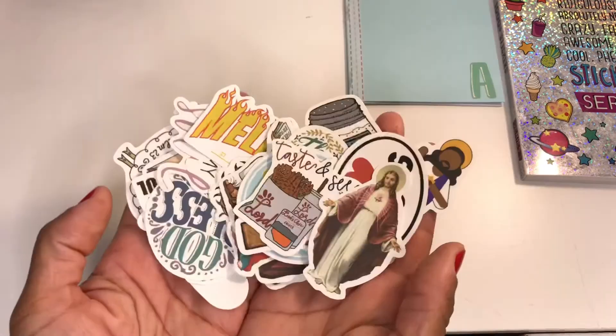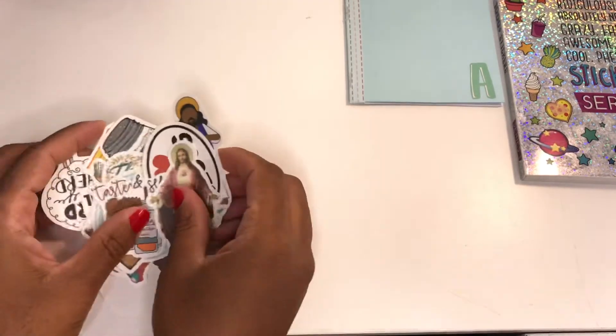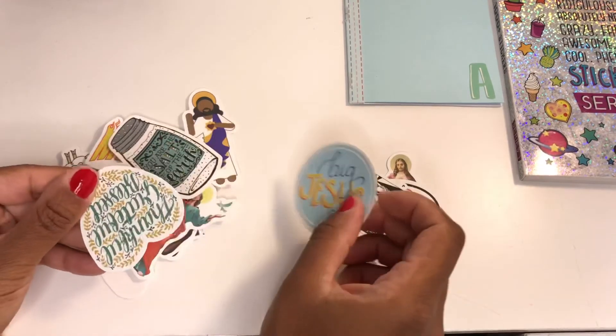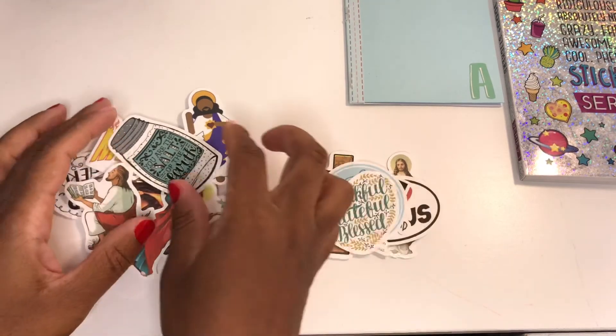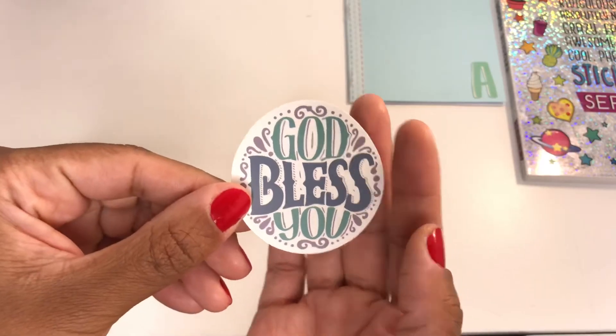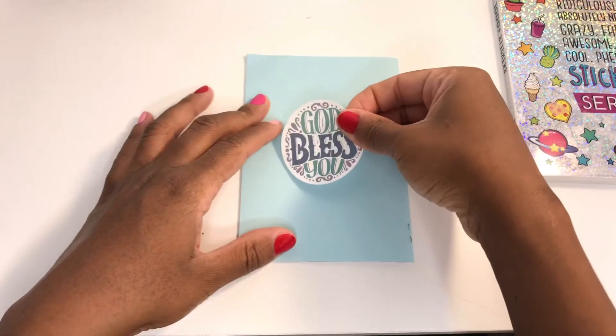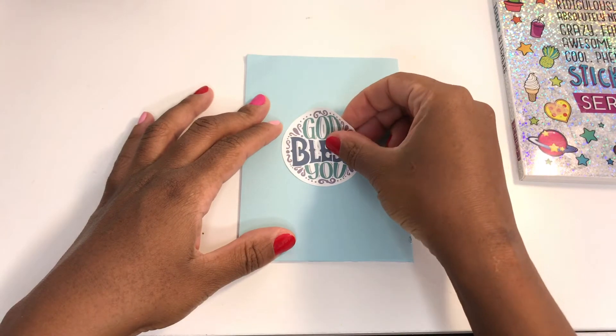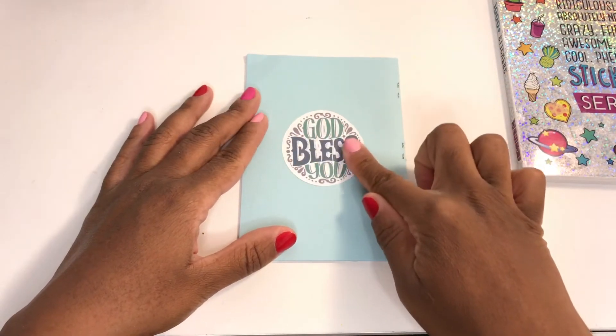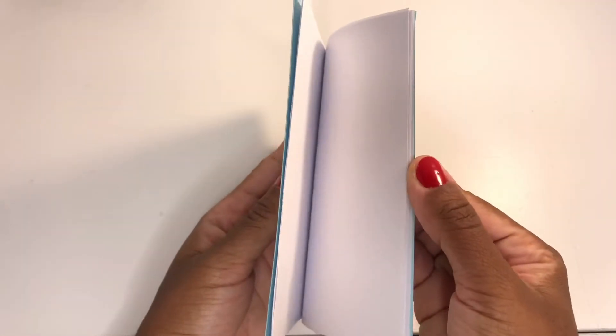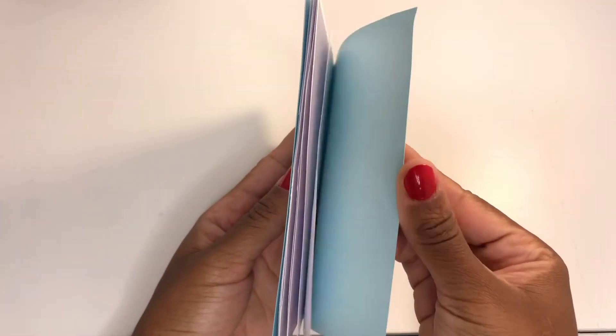But of course, because this is a daily prayer journal, I'm going to be using one of my Jesus stickers, which I will also leave a link down below. I'm just going to add one that is very fitting for the theme. This one says 'God bless you' and I'm going to place that right in the middle at the back of this journal. I think it looks so perfect and so cute.